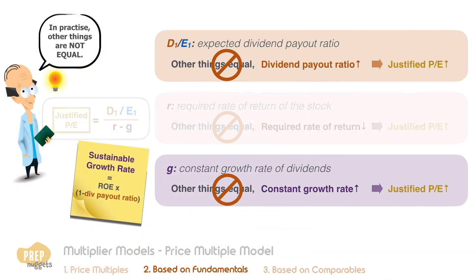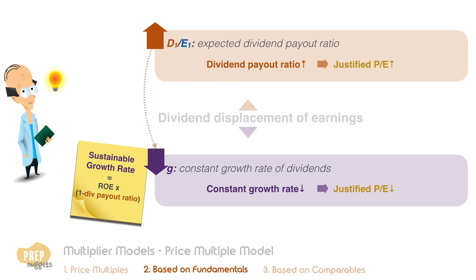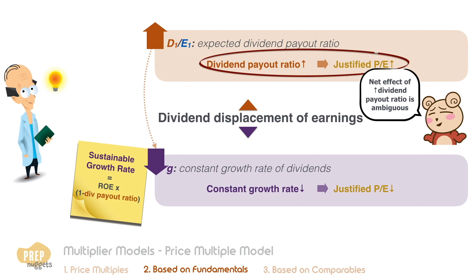In practice, however, other things are not equal. The sustainable growth rate of a company is its ROE multiplied by one minus the dividend payout ratio. This means that when a firm increases its dividend payout ratio, the growth rate of dividends will decrease, as the firm has retained less cash to fund growth. So while higher dividends will increase a firm's value, a lower growth rate will decrease it. This relationship is referred to as the dividend displacement of earnings, and the net effect on firm value of increasing the dividend payout ratio is ambiguous. Intuitively, firms cannot continually increase their market values by increasing the payout ratio — otherwise all firms would have 100% payout ratios.